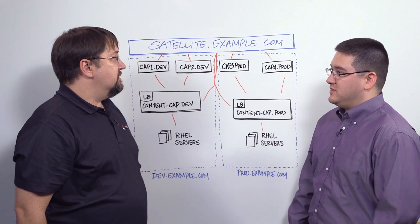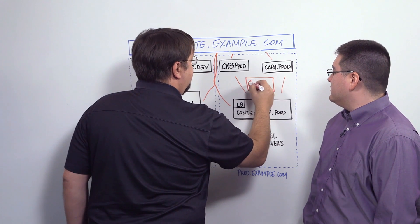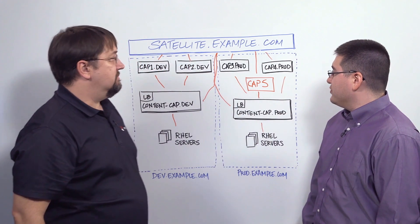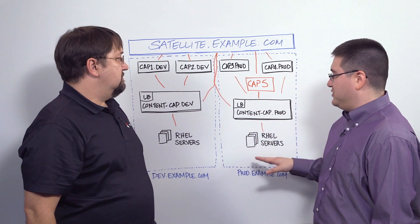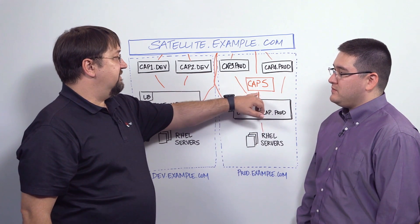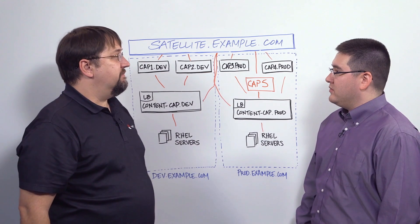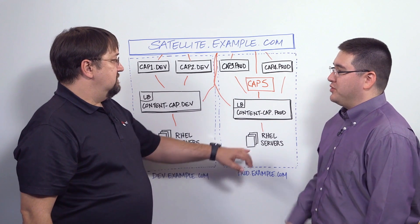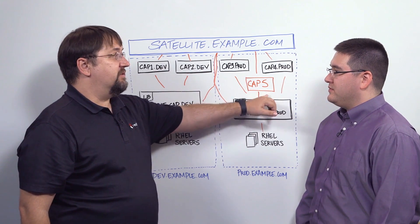How do we add more provisioning capacity to the Satellite server? We would deploy another capsule server — in this instance, we would deploy CAP 5 and add it to the load balancer. You've got to add the IP address of CAP 5 into the load balancer, and at that point the RHEL clients will automatically round-robin to CAP 5. For example, if we're deploying three servers, the first server will go to CAP 3, second server will go to CAP 4, and the third will go to CAP 5.